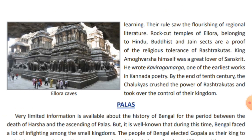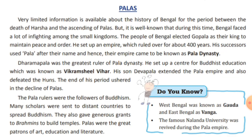Next are the Palas. We have very limited information about the history of Bengal of this period, but there was a lack of peace in this area. So the people of Bengal elected Gopala as their king, who could maintain peace and order. He set up an empire and the rulers of his family ruled for about 400 years. His successors used 'Pala' after their name, which is why this empire came to be known as the Pala dynasty.